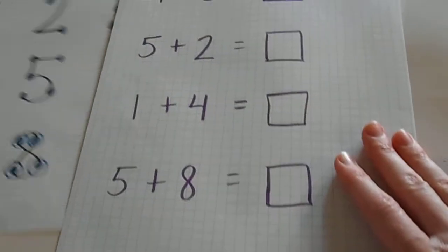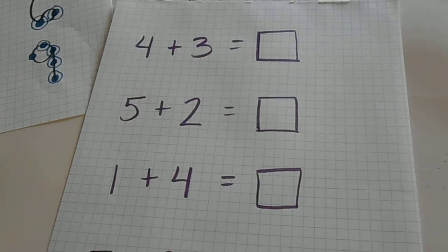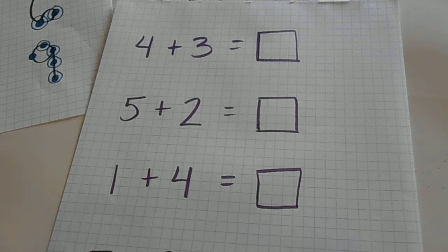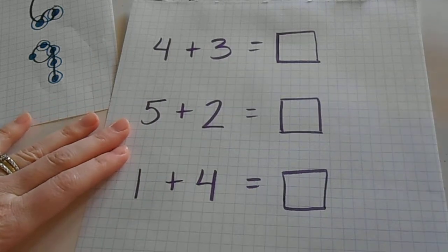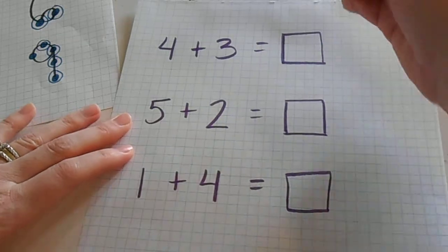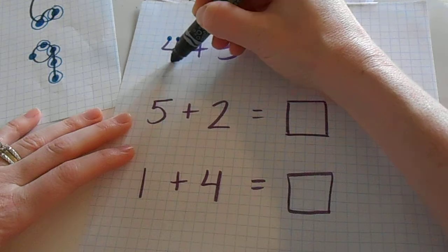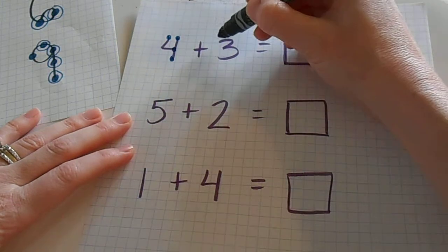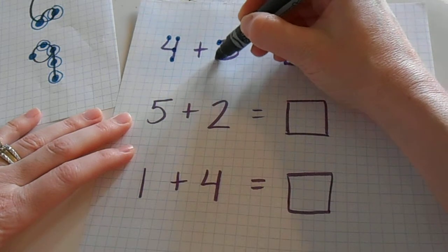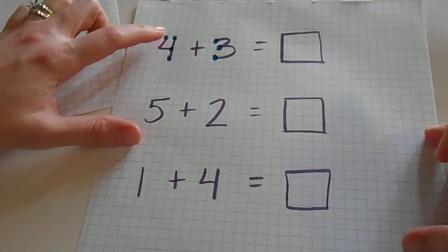Let me show you how to use this in a more practical way with addition problems. So your kids will start to learn how to do addition by counting each number. For example, if we have a problem such as four plus three, they would count one, two, three, four, and put their dots on there. And then they would count one, two, three, put their dots on the three.